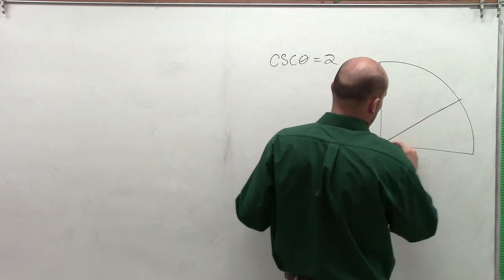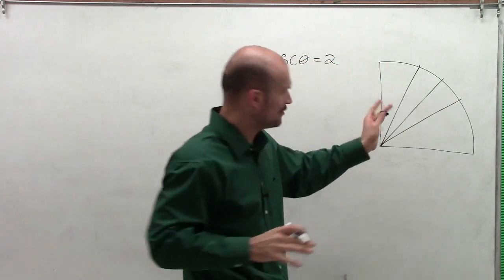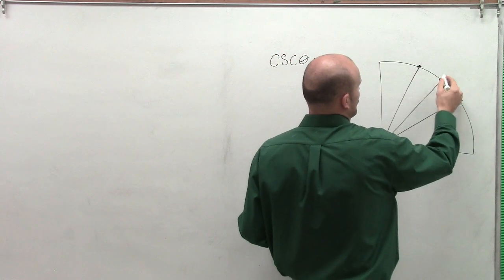So what I'm going to do then is quickly draw the first quadrant of the unit circle. A little bit rough, but we'll go through it. And I'm going to graph these first couple points that we'll have.